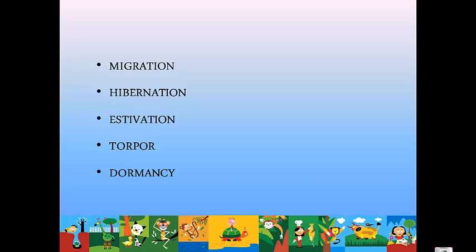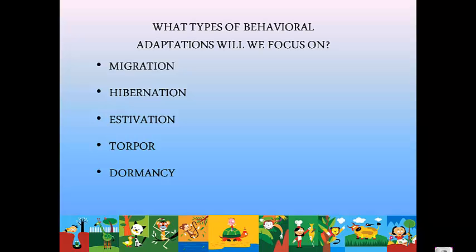We're going to talk about five different types of behavioral adaptations today. They are migration, hibernation, estivation, torpor, and dormancy.